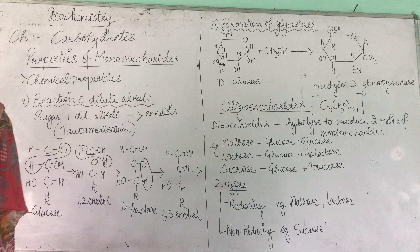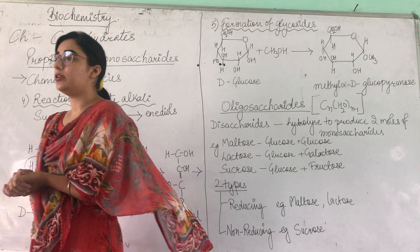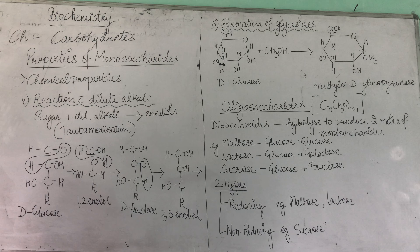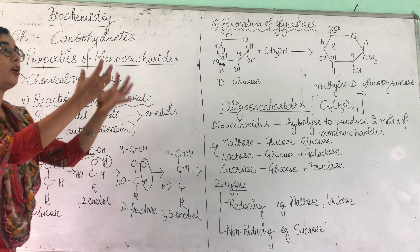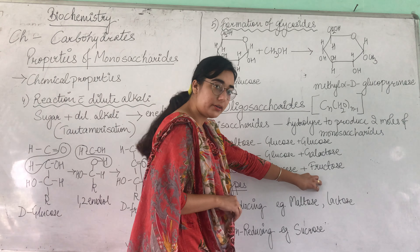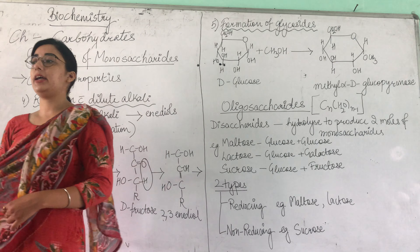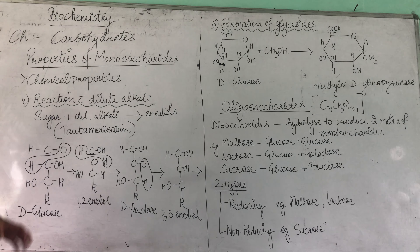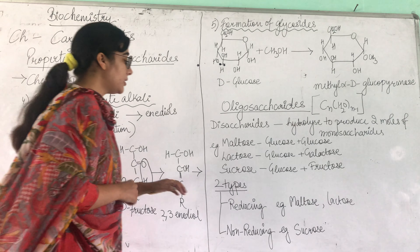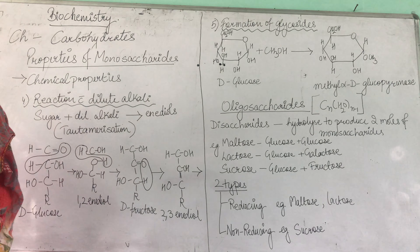Now these disaccharides are basically of two types: reducing disaccharides and non-reducing disaccharides. Reducing disaccharides have a free reducing carbon unit. Non-reducing disaccharides do not have a free reducing carbon — it is attached. Examples of reducing disaccharides are maltose and lactose. An example of a non-reducing disaccharide is sucrose.